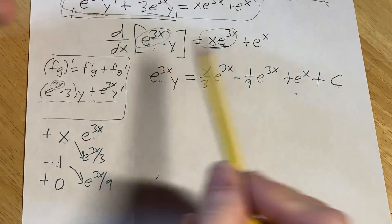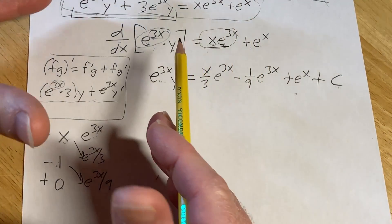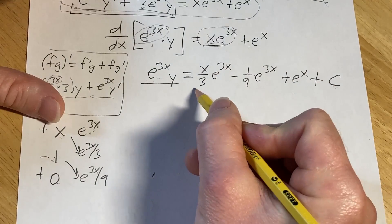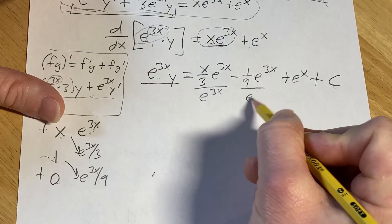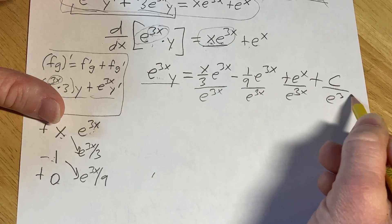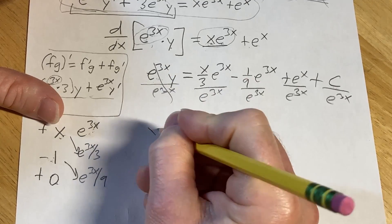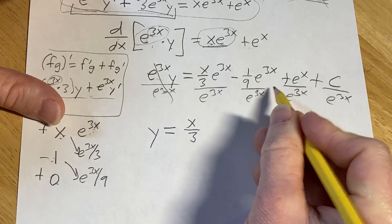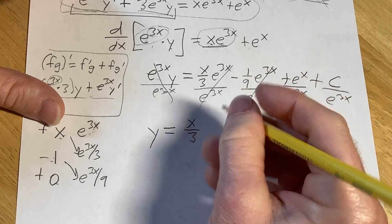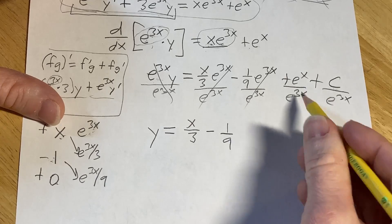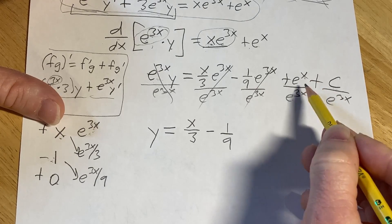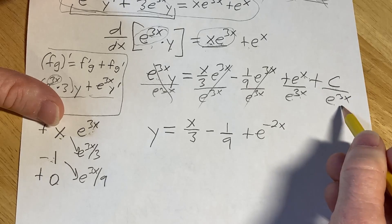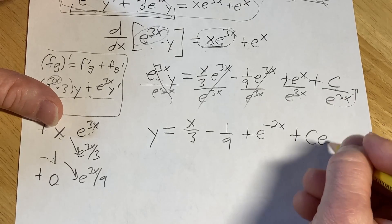We're adding the constant to both sides, combining them — that's why we write it only on one side. Now we divide both sides by e to the 3x, dividing each term. We get y equals x/3 minus 1/9 (those e to the 3x terms cancel), plus e to the x divided by e to the 3x which is e to the negative 2x (subtracting exponents: x minus 3x), plus c·e to the negative 3x.